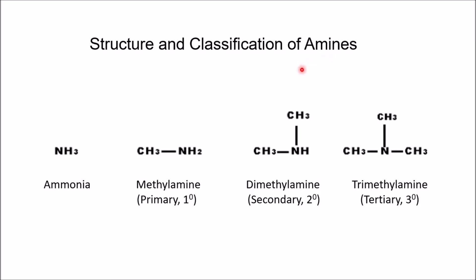Amines are considered as derivatives of ammonia in which one or more hydrogen atoms are replaced with alkyl or aromatic groups. The number of alkyl groups attached to the nitrogen atom determines the classification of primary, secondary, or tertiary amines.